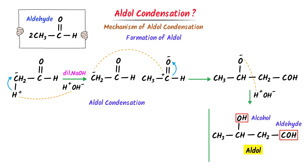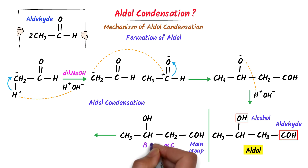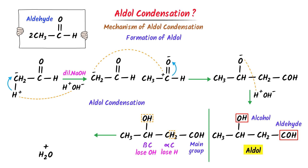Now I will teach you aldol condensation. Aldol condensation is the removal of a water molecule from the aldol. I write here this aldol and provide some heat to it. We can see that this CHO is the main group, this is the alpha carbon, and this is the beta carbon. Listen carefully: the alpha carbon will lose hydrogen and the beta carbon will lose OH. Hence, I write here H₂O and write the remaining molecule. Alpha carbon and beta carbon have each lost one species.